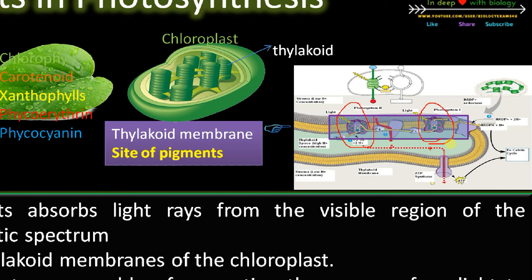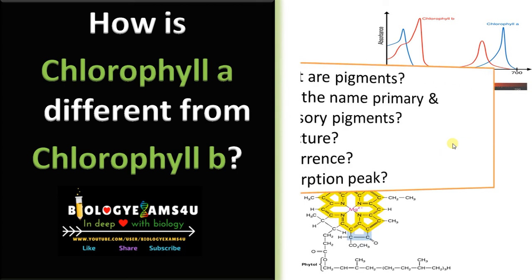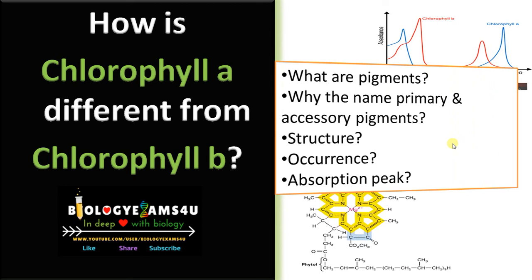That energy is used to fix carbon dioxide to carbohydrate during the light-independent reaction, or Calvin cycle, of photosynthesis. At the end of this video you will be able to understand how chlorophyll A is different from chlorophyll B, including why they are named primary and accessory pigment, and the structure, occurrence, and absorption peak of both chlorophyll A and chlorophyll B.